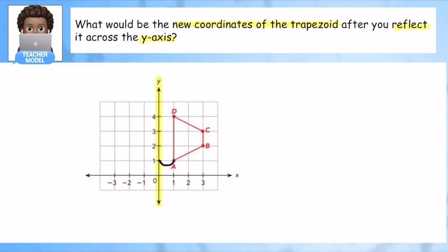A is one away. So A prime is going to be one away. B is one, two, three away. So one, two, three. Here's B prime.